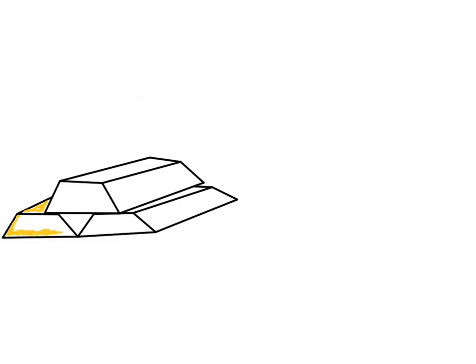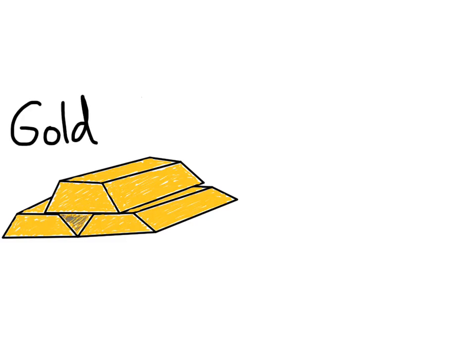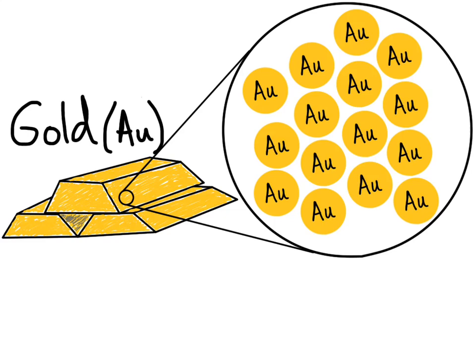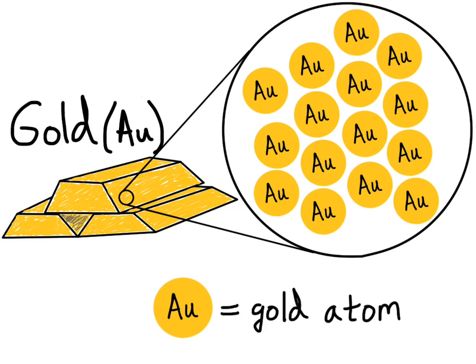First we'll look at elements. I'll draw a familiar element here — these yellow bricks — and when I'm finished you'll see that it's the element gold. Gold is the element I've drawn here, and the chemical symbol for gold is AU. Now if you were able to see the particles that make up pure gold, you would see all the same type of particle — in fact, only one type of atom: the gold atom. These little yellow spheres represent a gold atom. So gold is a pure substance; it's made up of just one type of atom.